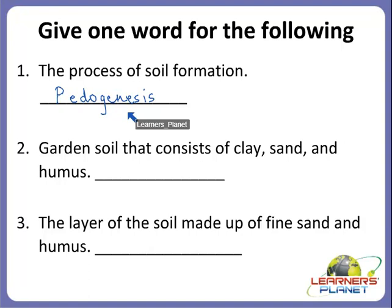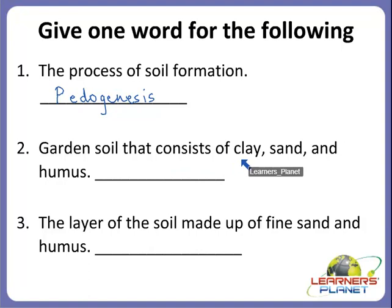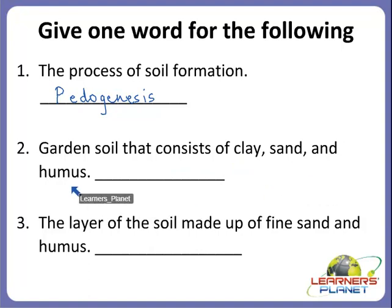Alright, children. Now the next one: garden soil that consists of clay, sand, and humus — what is it called? It is very fertile and very useful for growing crops. Yes, very good — it is the loam soil.